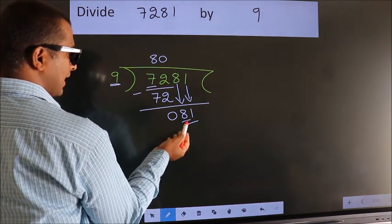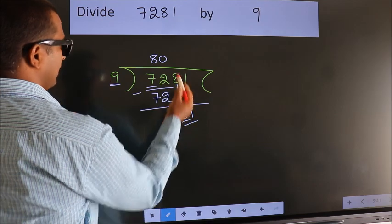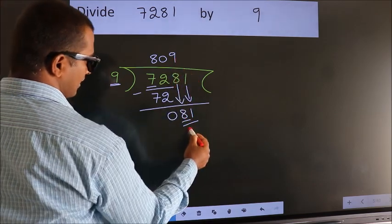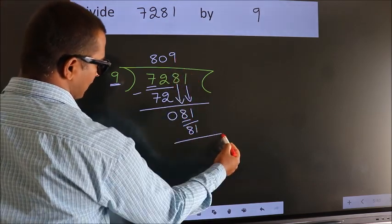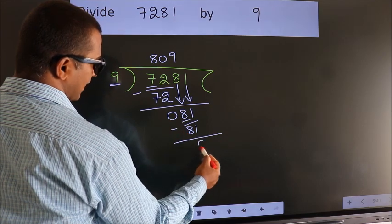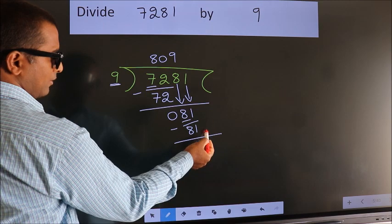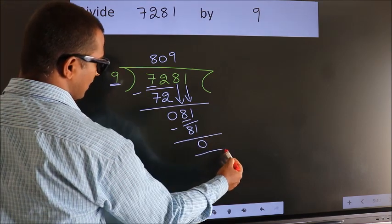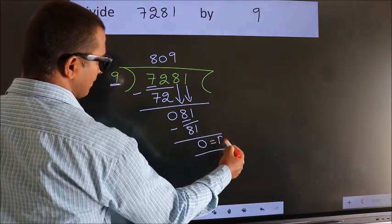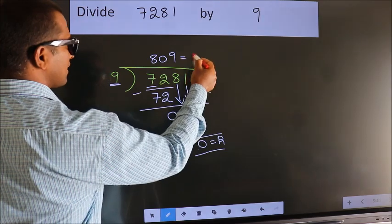When do we get 81? In the 9 table. 9 times 9 is 81. Now we subtract. We get 0. No more numbers to bring down. So we stop here. This is our remainder. This is our quotient.